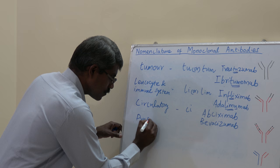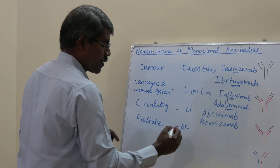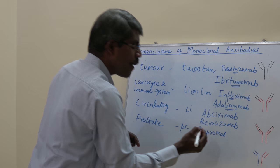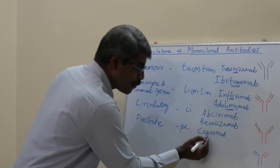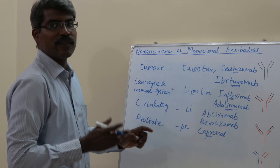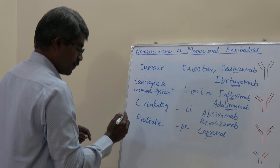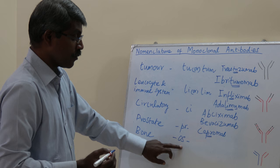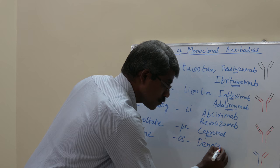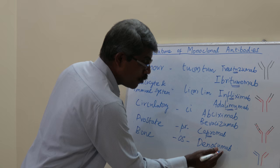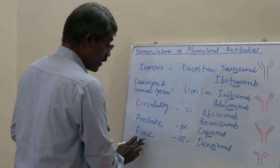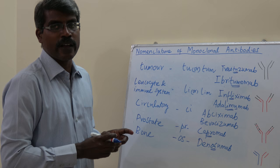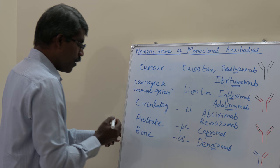If the target is prostate, the infix 'pr' is used. Example: capromab pendetide — 'o' indicates murine origin, 'pr' indicates prostate; it targets prostate-specific membrane antigen (PSMA). If the target is bone, the infix 'os' is used — as in osteology. For example, denosumab contains 'u' (fully human) and 'os' (bone); it targets RANK ligand and is used for osteoporosis. If the target is a virus, the infix 'vi' is used. Palivizumab contains 'zu' (humanized) and 'vi' (virus) — it targets respiratory syncytial virus (RSV).